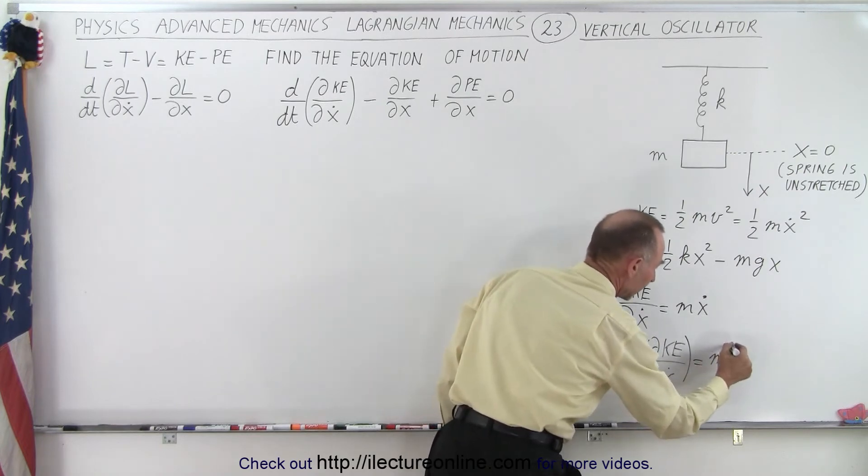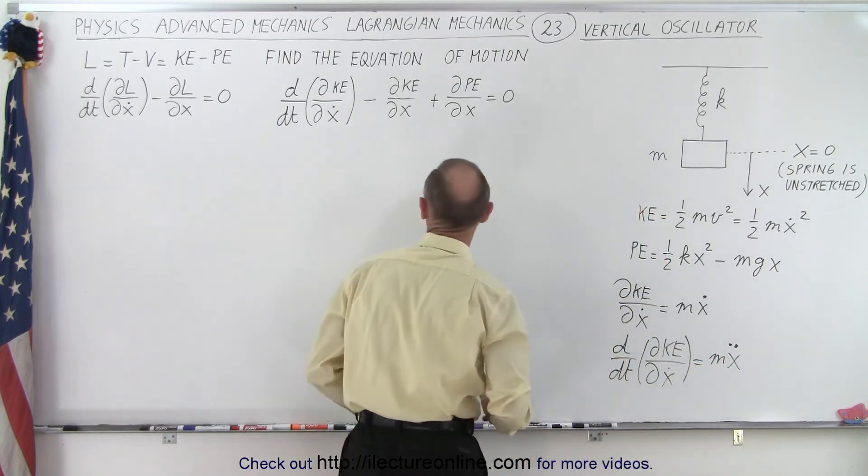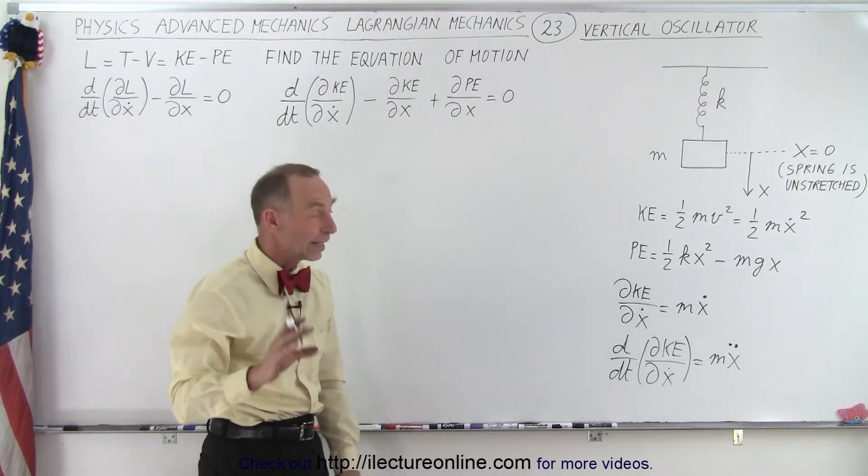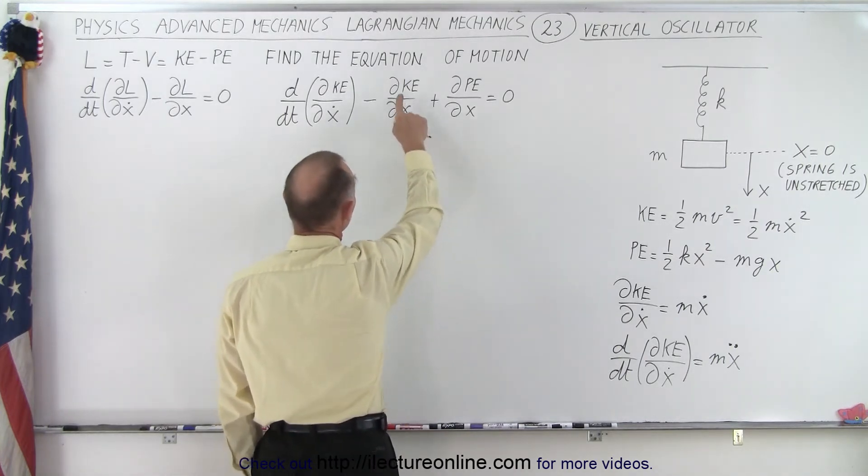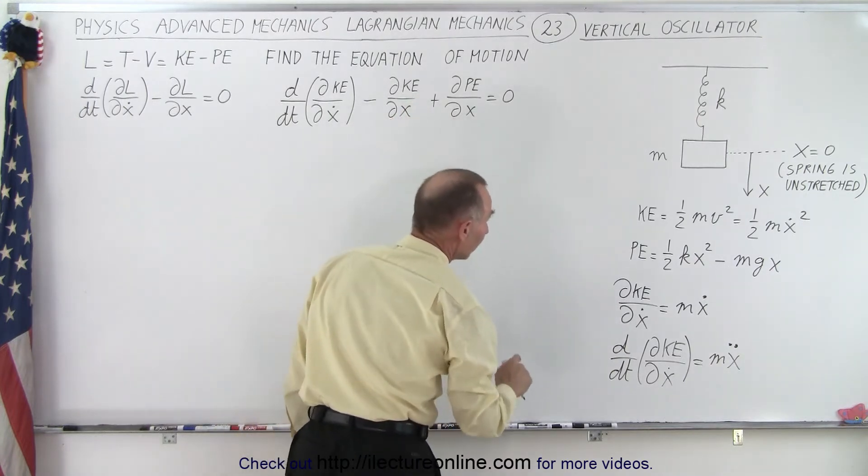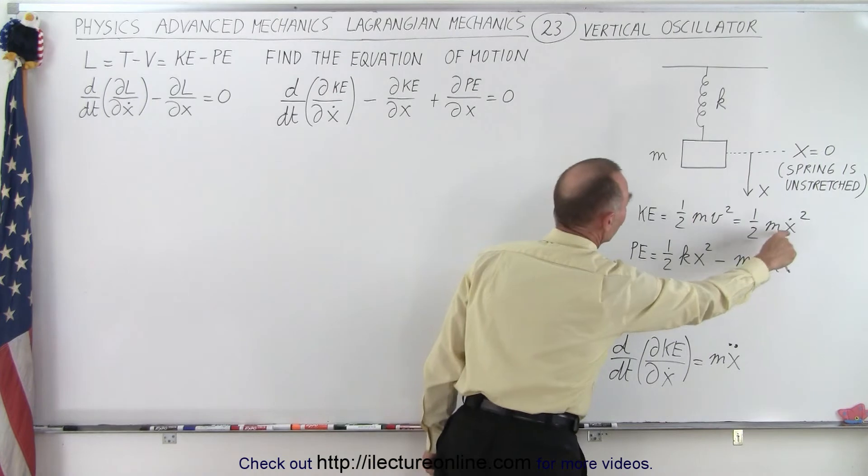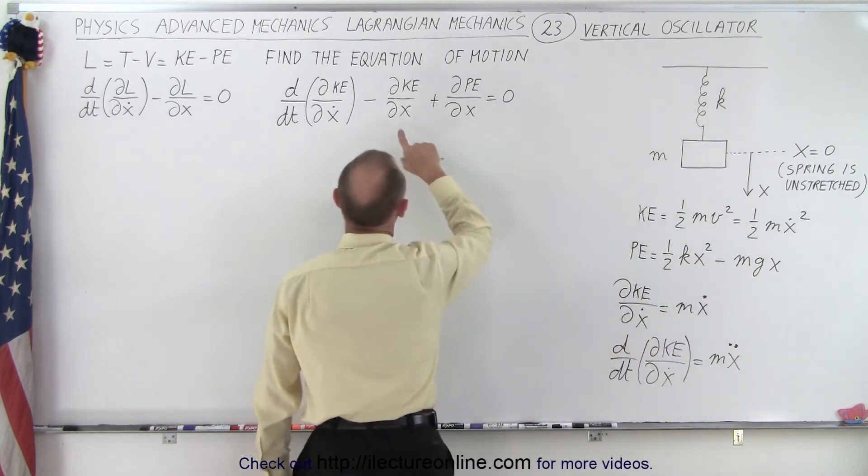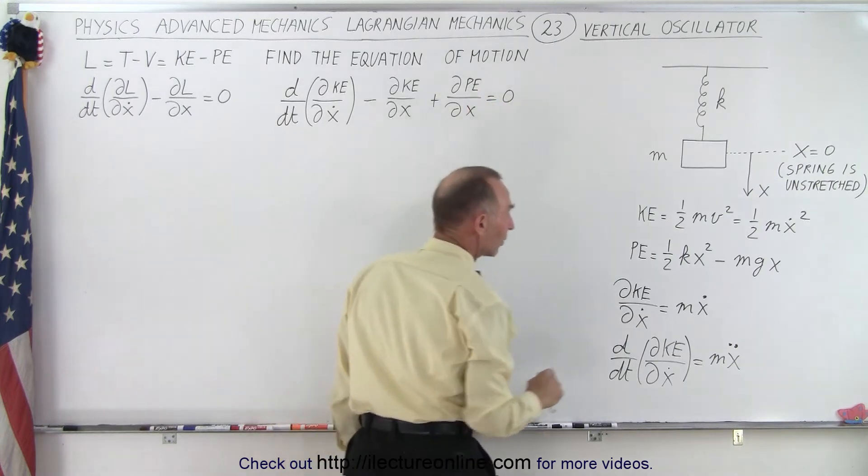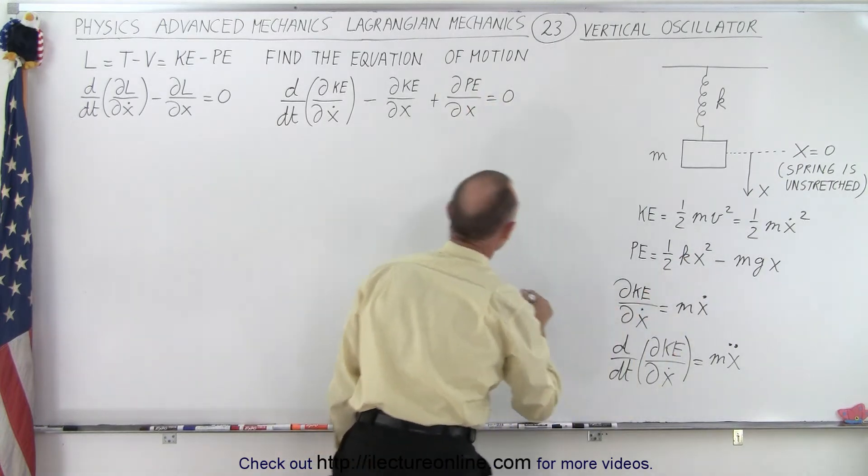Notice that's exactly the same thing we would have gotten if we had used this technique with the Lagrangian. But now the next part is going to be different because we're going to take the partial of the kinetic energy with respect to x. And notice if we do that, we end up with zero. Then we're going to take the partial derivative of the potential energy with respect to x.